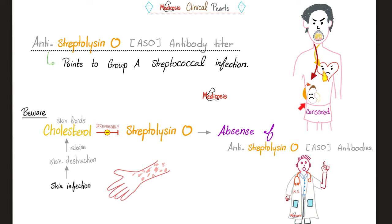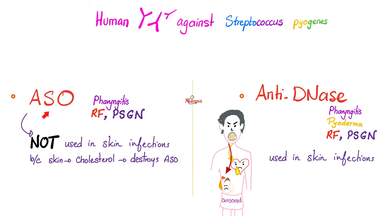If the kidney disease originates from a throat infection, ASO titer will be positive. If it originates from a skin infection, the titer will be negative or low — because skin lipids and cholesterol inhibit streptolysin O. That is why ASO antibodies are positive in rheumatic fever but may or may not be positive in acute post-streptococcal glomerulonephritis. ASO is used to diagnose pharyngitis and rheumatic fever, but not skin infections like pyoderma, necrotizing fasciitis, cellulitis, or erysipelas.